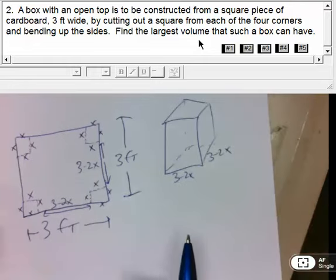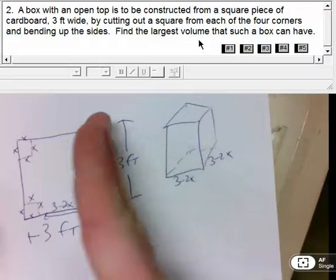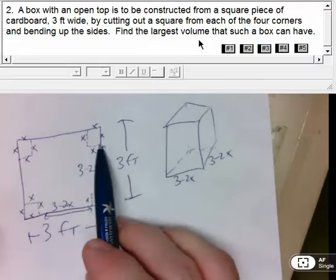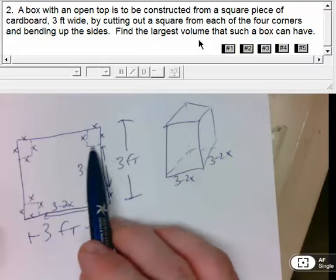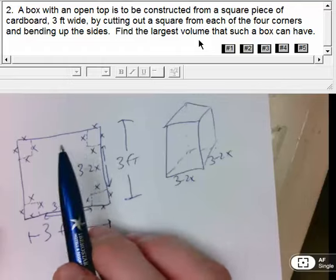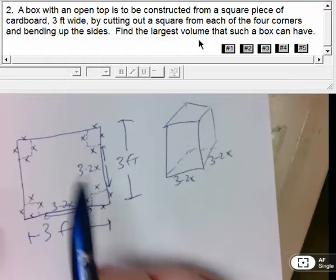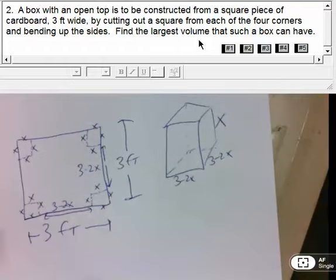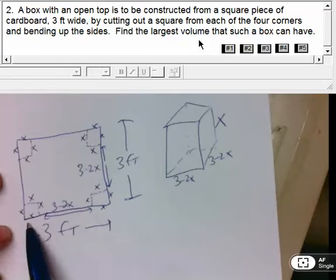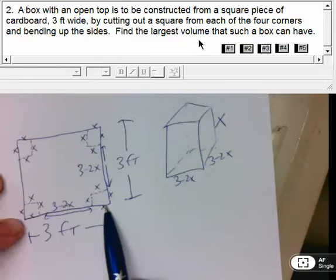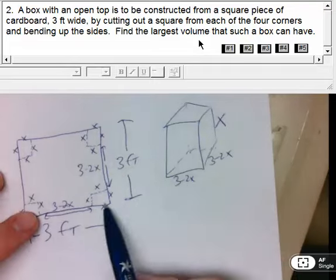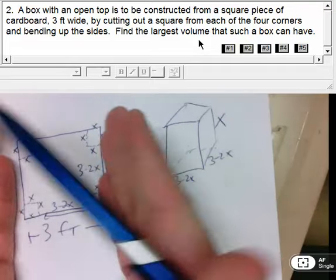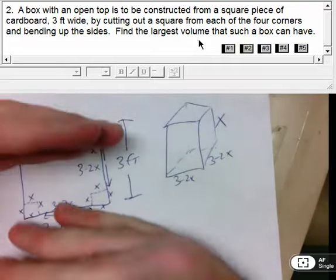So then the question becomes, what's the height? Well, if you're folding this part up, this part right here is coming up vertically. So whatever X is, is now the height of this prism. So this is X. Those are my dimensions. I had a 3 foot length, cut out 2X's, another 3 foot length, cut out 2X's, and folded up the X value to make my height.